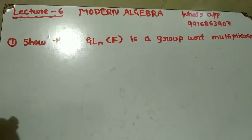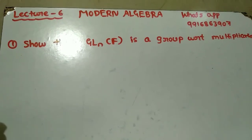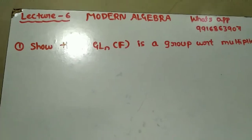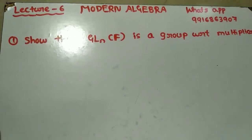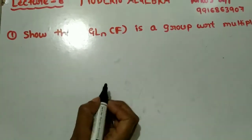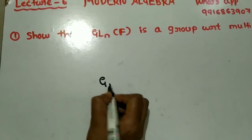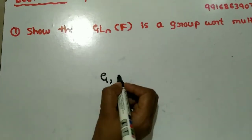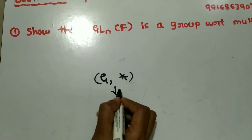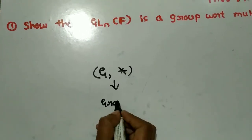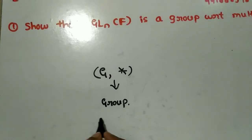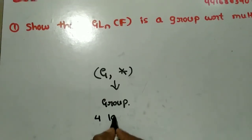In this lecture we will study about the General Linear Group. But before starting, let me revise that topic once. So for checking a group, what is the definition? Any non-empty set G with respect to a binary operation is said to be a group if and only if it satisfies 4 laws.